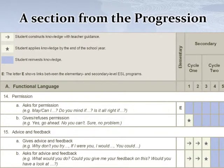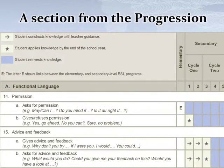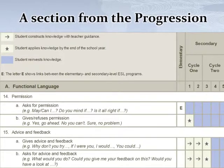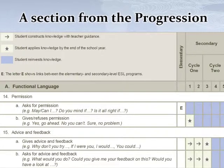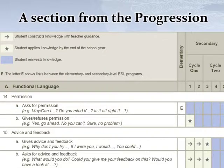At 14B — gives or refuses permission. By the end of secondary one, students should be able to apply this knowledge, so they should be able to give or refuse permission. From secondary two to five, they should be able to reinvest this knowledge, but it should be acquired by the end of secondary one.